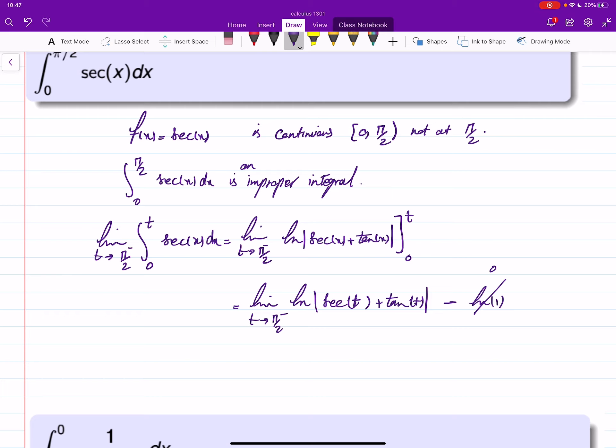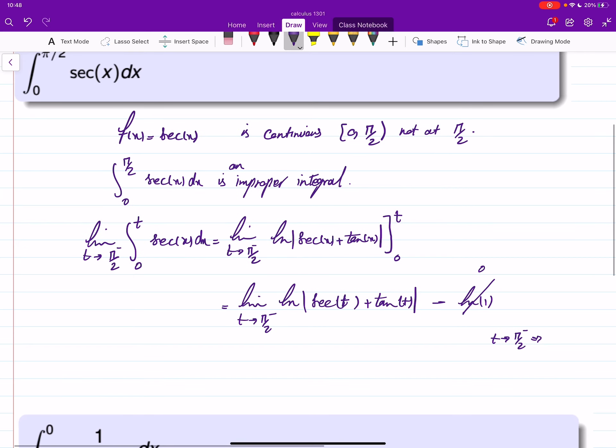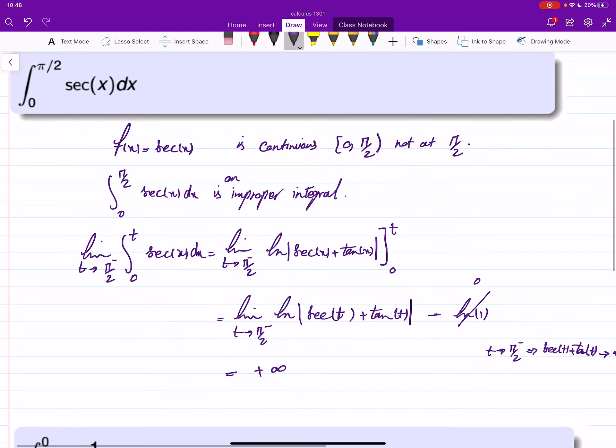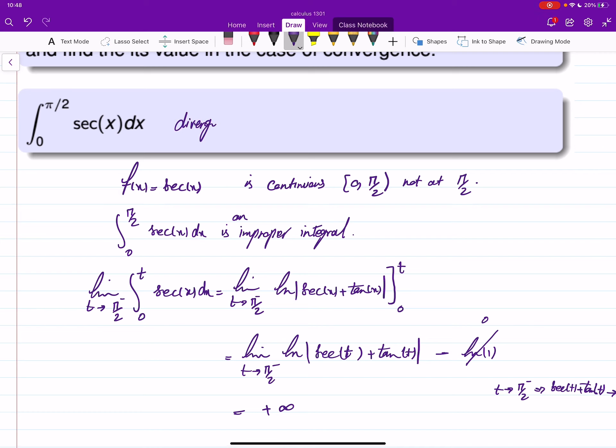Now as t goes to π/2, secant from the left will go to plus infinity, and tan t will go to plus infinity. So in other words, as t goes to π/2, then secant t plus tan t will go to plus infinity, and ln of plus infinity is plus infinity. You can look at the graphs, but that's what it will give you. So that means that this is divergent; it doesn't have any good value.